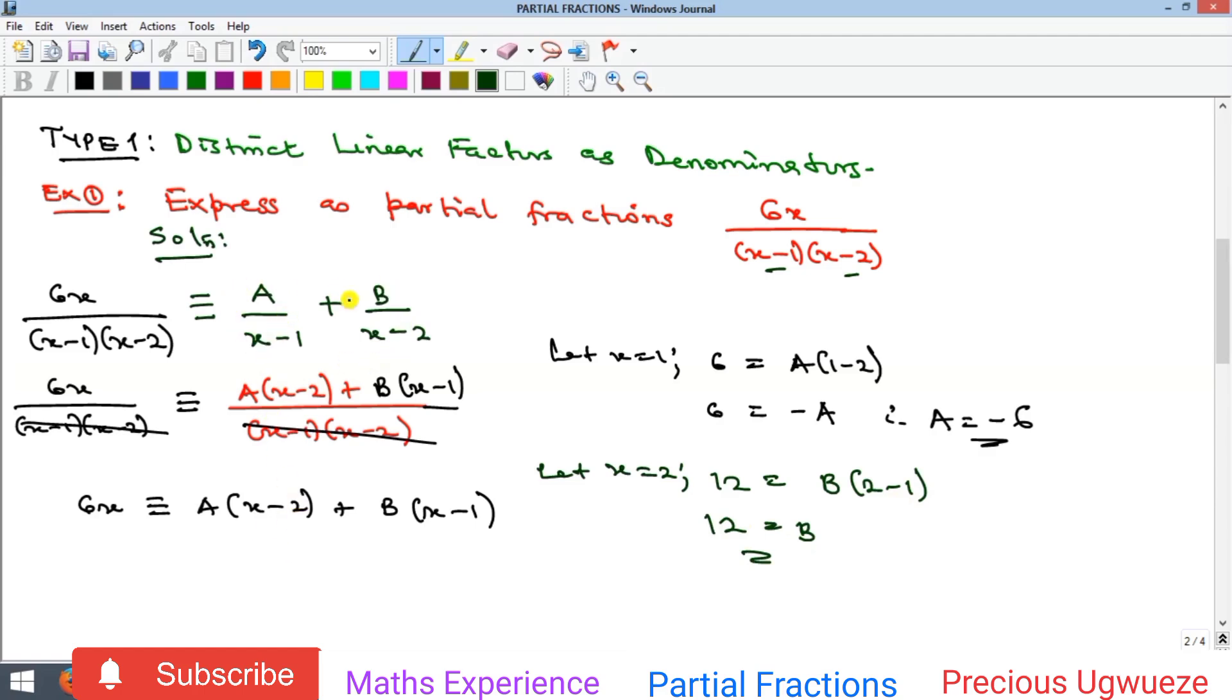If I put A here, which is minus 6, I will have minus 6 over (x minus 1). Then if I put B, which is 12, that will give me plus 12 over (x minus 2). Of course, you can rewrite this...